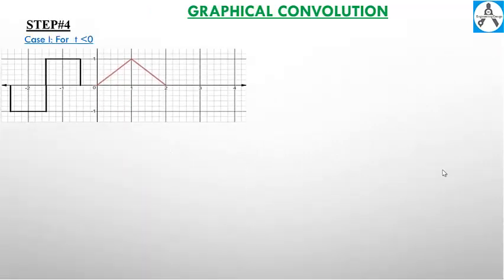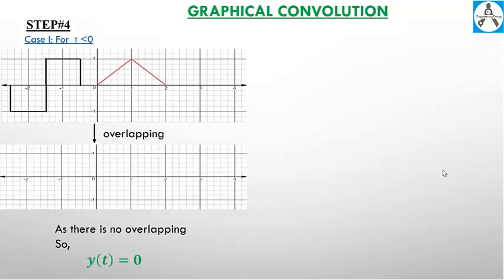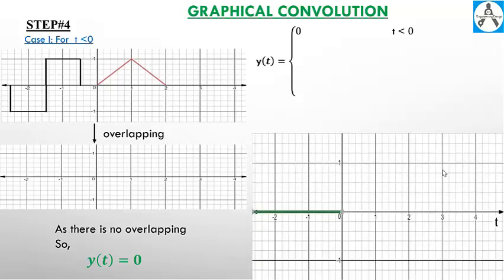Step number four: as there is no overlapping, y of t is equal to zero. So the output y of t is equal to zero for t less than zero.